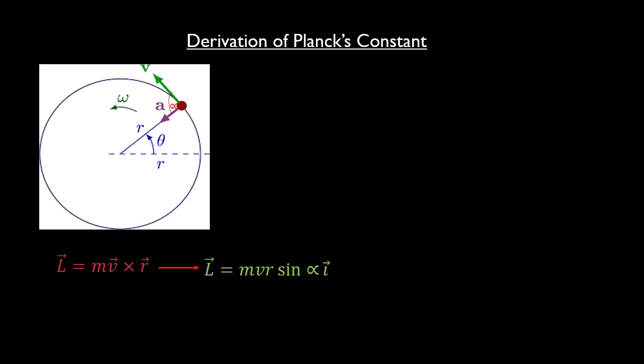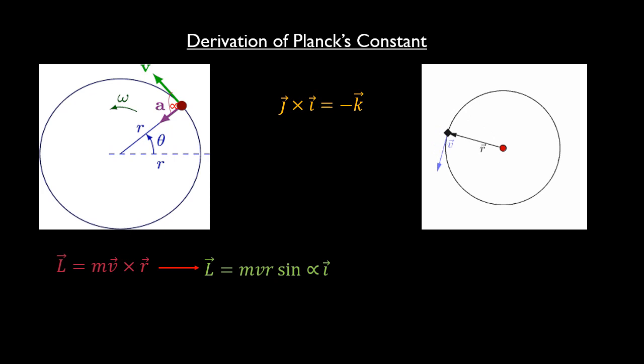Alpha is the angle between the velocity and the radial vector. If the velocity is pointing up in the positive y direction and the radial vector is pointing to the right in the positive x direction, then the direction of the momentum is given by j cross i, which equals minus k. That means the momentum will be pointing into the screen. Notice how as the particle moves around the circle, the angle between the radius and velocity is always 90 degrees. The sine of 90 is positive 1, so the momentum becomes mvr times minus k vector.